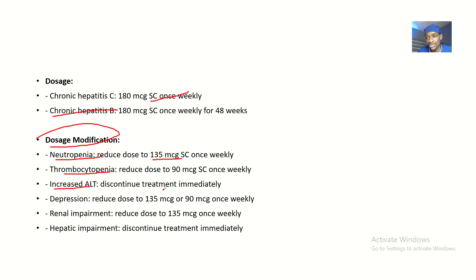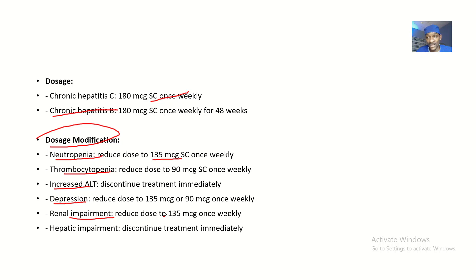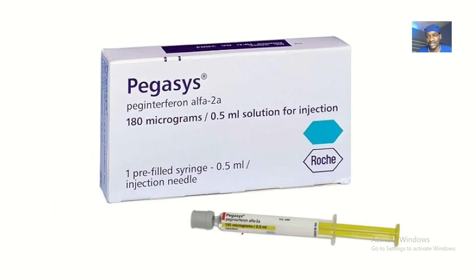For people who are depressed, you should reduce the dose to about 135. For people who have renal impairment, you should also reduce the dose to about 135. For people who have hepatic impairment, you should discontinue the treatment immediately.